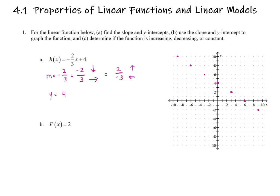Connect the points with a line, and make sure your line goes from edge to edge of the graph. You can also put arrows on the ends to signify it goes from negative infinity to positive infinity on the x-axis — if you draw it too short, people will think you're drawing a line segment and not a line. Part c says to determine if this function is increasing, decreasing, or constant. Because the slope is negative, I know it's decreasing. You can also look at the graph: from left to right, the graph is going down, so it's decreasing.